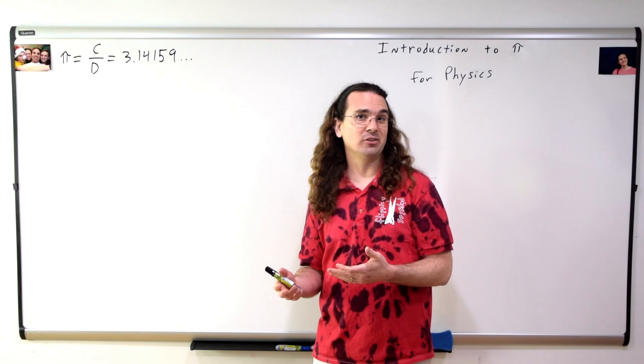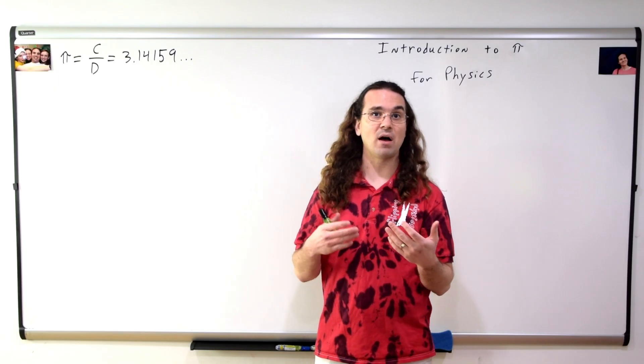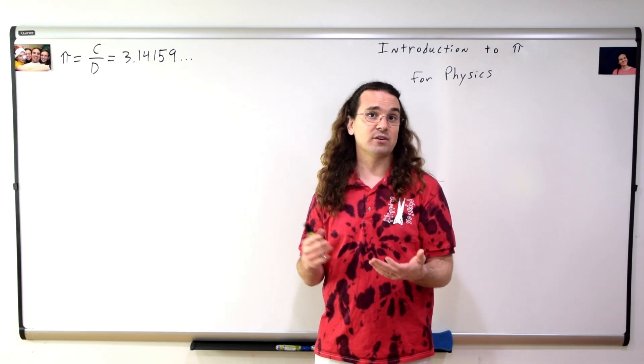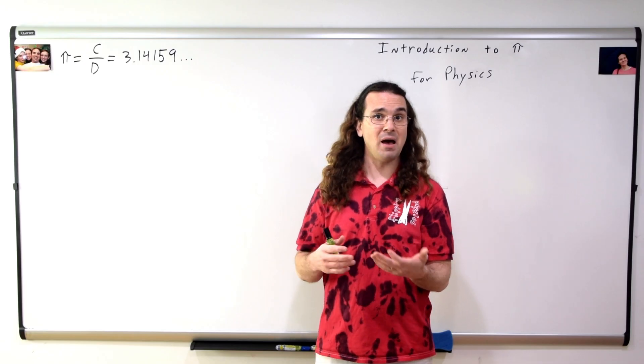And it is an irrational number, meaning that decimal will go on forever without repeating, and there is no simple fraction which equals pi.